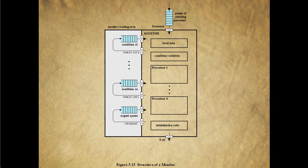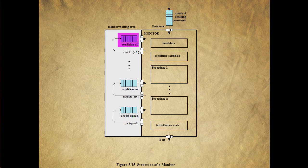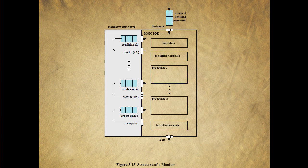This figure illustrates the structure of a monitor. Although a process can enter the monitor by invoking any of its procedures, we can think of the monitor as having a single entry point that's guarded so that only one process can be in the monitor at a time. Other processes that attempt to enter the monitor join a queue of processes blocked, waiting for monitor availability. Once a process is in the monitor, it may temporarily block itself on condition X by issuing C-wait(X). It's then placed in a queue of processes waiting to re-enter the monitor when the condition changes and resume execution at the point following the C-wait call. If a process executing in the monitor detects a change in the condition variable X, it issues C-signal(X), which alerts the corresponding condition queue that the condition has changed. And that concludes our very short introduction to monitors.